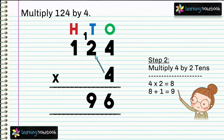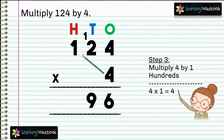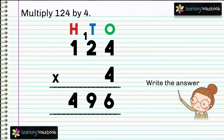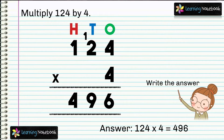Now in step 3, multiply 4 by 1 hundredths. 4 into 1 equals to 4. So let's write the answer. 124 into 4 equals to 496.